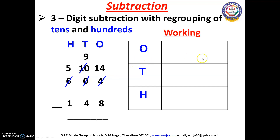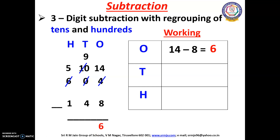Now we can subtract 14 minus 8. Open your fingers, children: 8 after — 9, 10, 11, 12, 13, 14. How many fingers have you opened? Yes, we have opened 6 fingers. So we have to write 6 here.